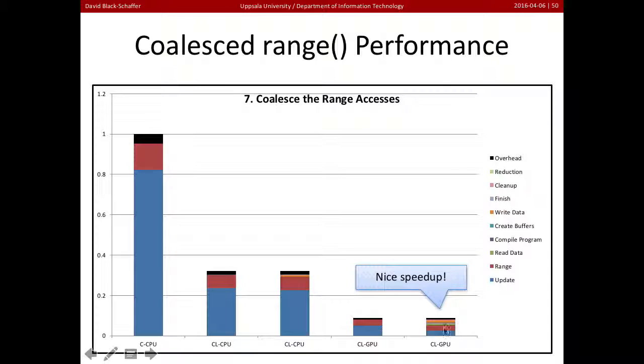And when we do this what do we get? Well we've now got a really good speedup. So now range is running much much faster and we've got a good overall speedup. So we've done a very good job of accelerating both the update and the range compared to what we started with, and now running on our GPU we're about 11 times faster.